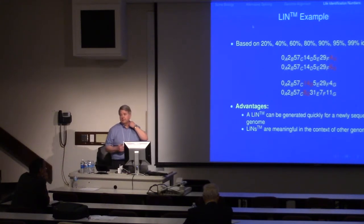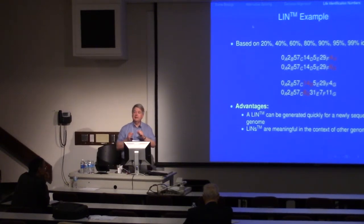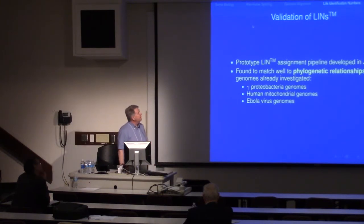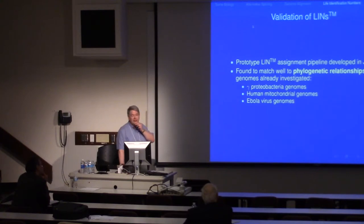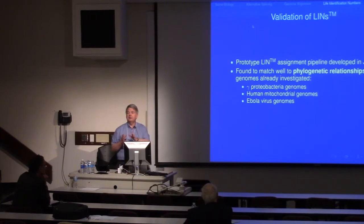The thing about this naming scheme is that it's fast — you can do it as soon as you've gotten the genome. You don't have to wait for publication; you can have a service to do it. The other thing is the codes are not just arbitrary — they have meaning with respect to other genomes. We've actually prototyped this and used it to compare to known phylogenetic relationships for a number of classes of organisms. This is a short list of the ones we've developed LIN codes for, and we found a good match between accepted phylogeny and what you could gather from these codes.